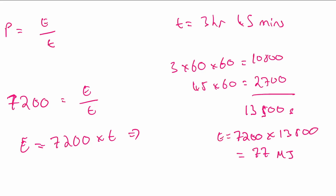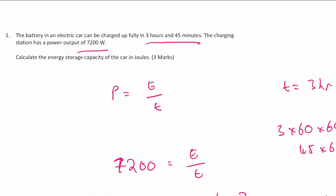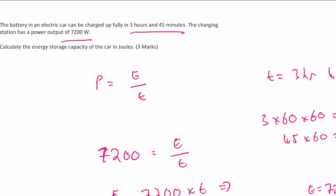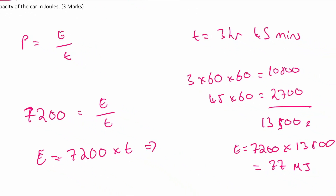In your calculator you'll get something like 97,740,000. According to the question, we should round to two significant figures. So technically this should be 78 megajoules, not 77. So we can change that — and that's your final answer.